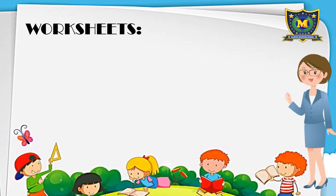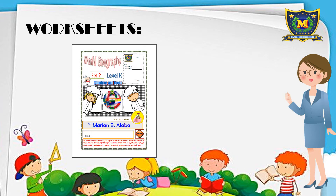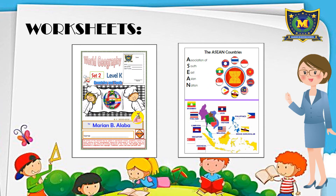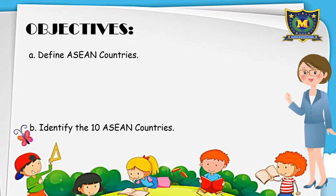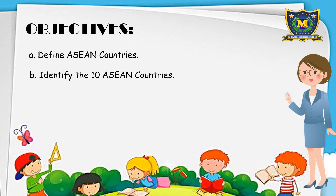For the worksheets, we will be needing our worksheet set 2 of our World Geography, and take note of this page because we will be working on it later. For the objectives: first, define ASEAN countries; next is identify the 10 ASEAN countries.